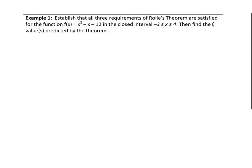The following example asks us to establish that all three requirements of Rolle's theorem are satisfied for the function f of x equals x squared minus x minus 12 within the closed interval between negative 3 and 4. Then we are to find the c values predicted by this theorem.